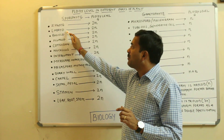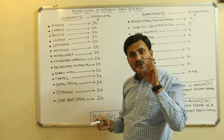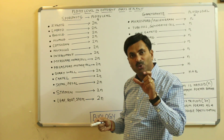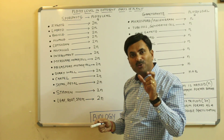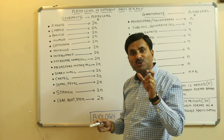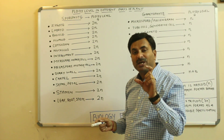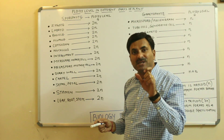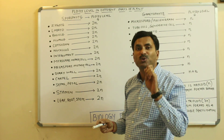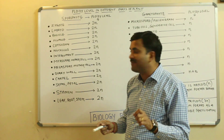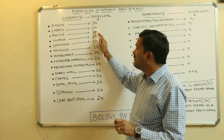Now, if we talk about the embryo — when mitosis occurs in the zygote, the unicellular zygote is converted into the multicellular embryo. Because mitosis has happened in the zygote, there is no change in the ploidy level, and hence the embryo will also have the ploidy level of 2N.